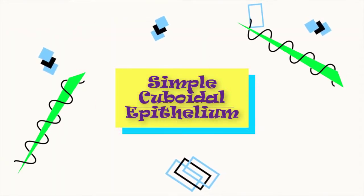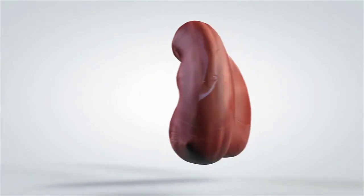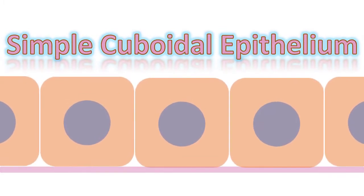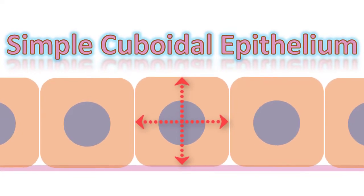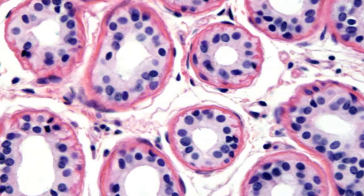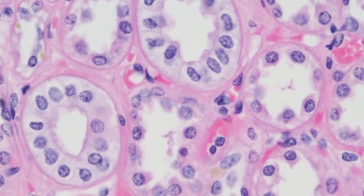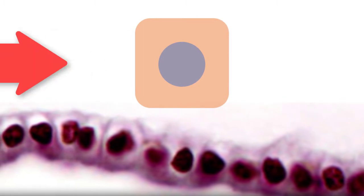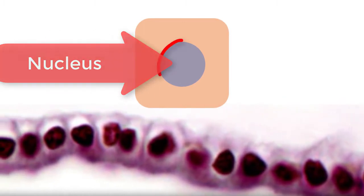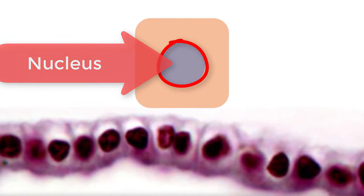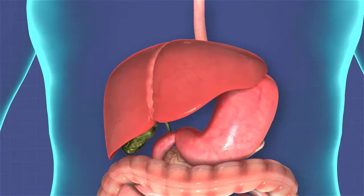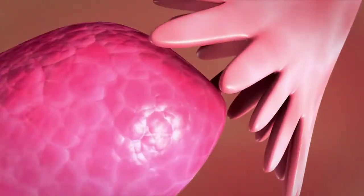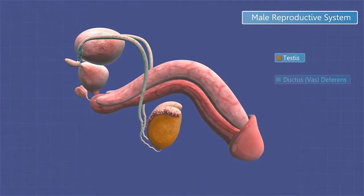Simple cuboidal epithelium lines the renal tubules of the kidneys and glands. The identifying features are that the cell shape is relatively square — typically as high as they are wide — though they don't form perfect squares inside the body. The best way to identify this tissue is to look at the nucleus: the nuclei will be relatively large and circular, located in the relative center of the cells. Simple cuboidal epithelium is also found in glands like the pancreas and in the gonads, covering the ovaries and lining the walls of seminiferous tubules in the testes.